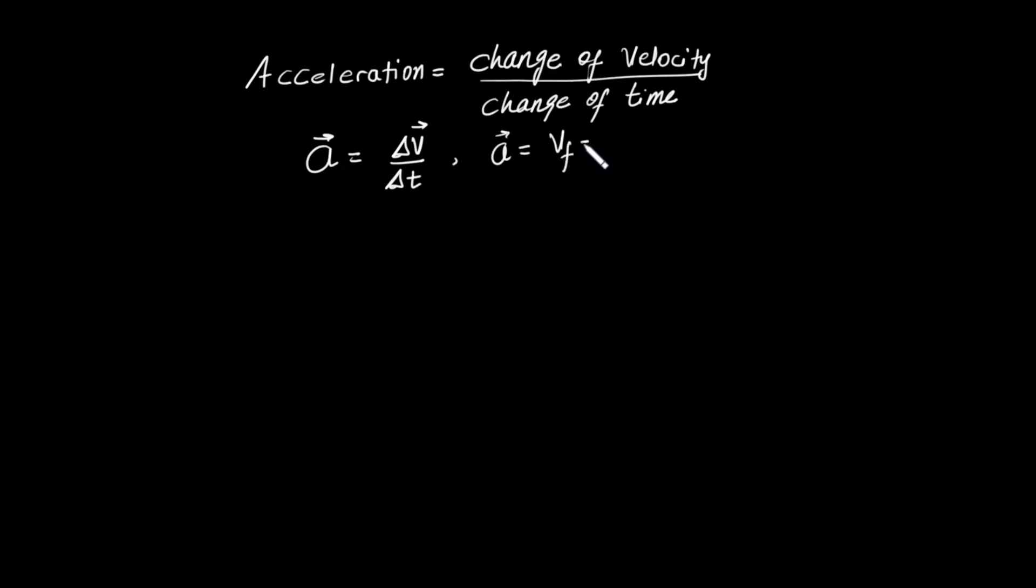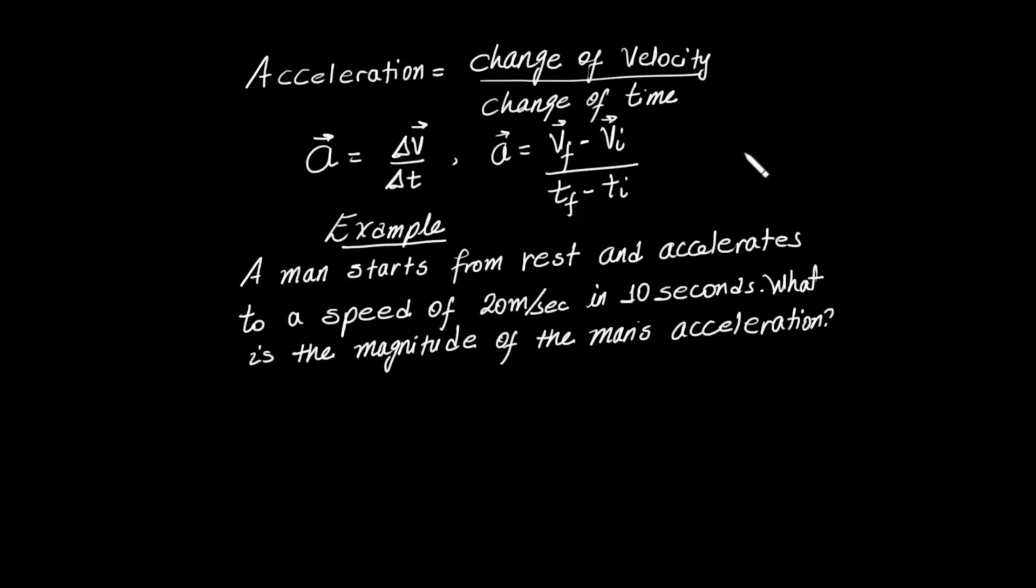The final velocity minus the initial velocity divided by the final time minus the initial time. For example, a man starts from rest. Rest means the initial velocity is zero.